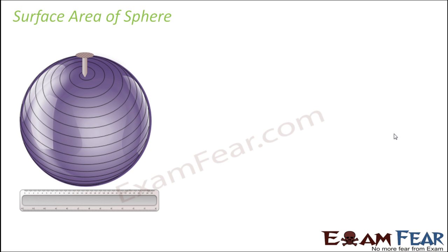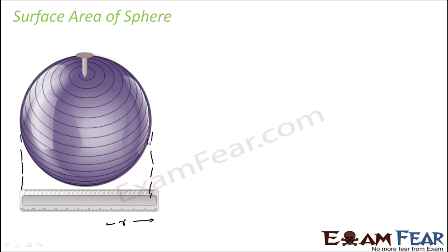First, measure the diameter of the sphere, then divide by 2 to get the radius. You take a sphere, use a scale to draw a line across it — that distance is the diameter. Then put a nail on any point, since any point is symmetrical for a sphere, and cover the whole sphere with thread. Cut that thread so you know exactly how much thread is required to cover this particular sphere.